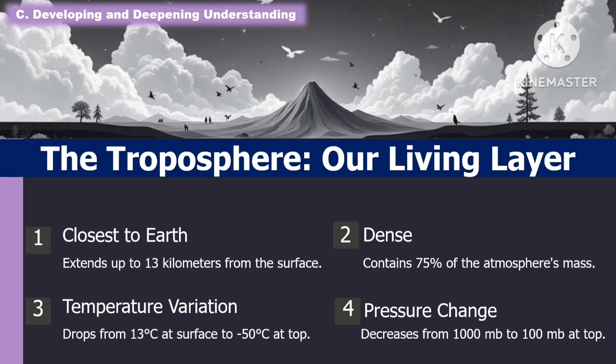The first layer of the atmosphere is the troposphere. It is considered our living layer, closest to Earth, and extends up to 13 kilometers from the surface. It contains 75% of the atmosphere's mass. When it comes to temperature variation, it drops from 13 degrees Celsius at the surface to negative 50 degrees Celsius at the top. Pressure decreases from 1,000 to 100 MB at the top.